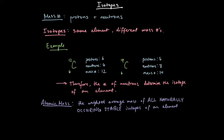And let's take a look at an example with carbon-12 and carbon-14. They have the same number of protons, 6, but what differs is the number of neutrons, 6 and 8. As such, that affects their mass number. And so, therefore, that number of neutrons determine the isotope of an element.